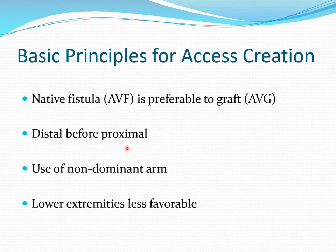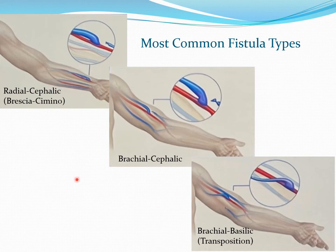Once distal fistulas fail, you move more proximally — to the proximal forearm and distal upper arm. Use of the non-dominant arm: if the patient is right-handed, you start creating access in the left upper extremity, and after using all possible sites there, you move to the right. Lower extremities are less favorable due to higher chance of infection and low patient acceptability. The most common fistula types are radial-cephalic, where the radial artery is connected to the cephalic vein — when created at the wrist, it is called Brescia-Cimino fistula — and it has the highest patency rates and lowest complication rates.